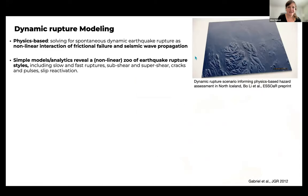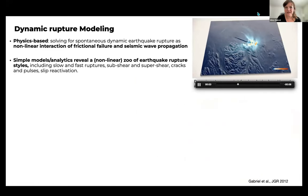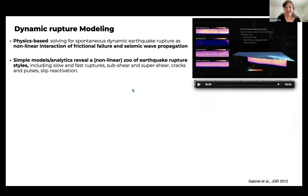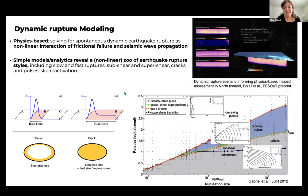Dynamic rupture modeling is a physics-based way to understand earthquake nucleation, propagation, and arrest of single earthquake scenarios. We solve for spontaneous dynamic rupture as the nonlinear interaction of frictional failure and seismic wave propagation. Using simple models and linear elastic fracture mechanics, we can generate a whole zoo of earthquakes and different physics governing rupture — leading to very slow or fast ruptures, sub-shear or super-shear speeds, earthquakes taking the shape of pulses or cracks with differences in their rise time, and slip reactivation.